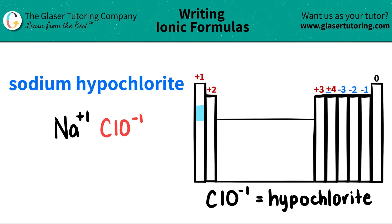Since we have the two charges, all we have to do is crisscross them, and that will give us the formula. This plus one for sodium crosses down, telling me that I only needed one ClO, and then this negative one crisscrosses down, telling me that I only needed one sodium. When you crisscross, the charges kind of vanish and you're just left with the number.